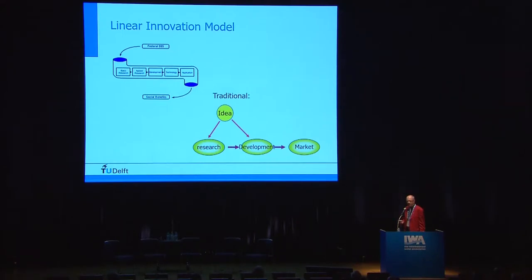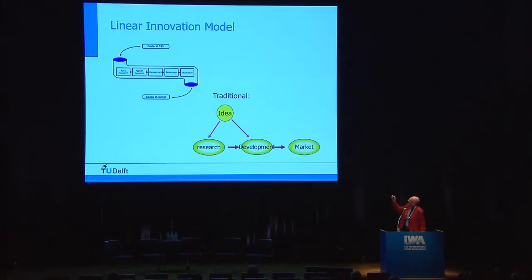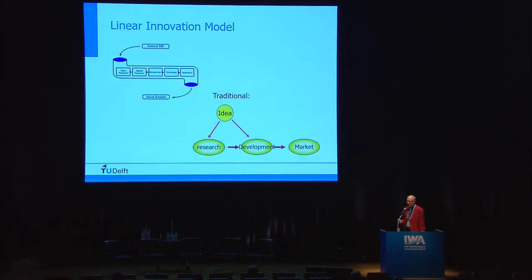What's needed is to get rid of still very present linear models for innovation — where money goes in, there's basic research, applied research, and in the end a product rolls out and society might benefit. The big problem with these kinds of models is that market and universities don't talk to each other, and you cannot visualize where things go wrong.